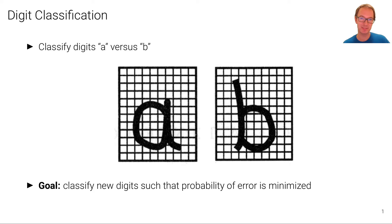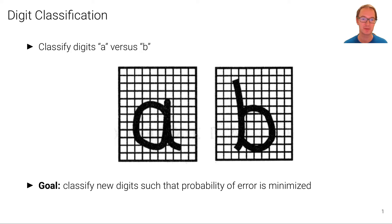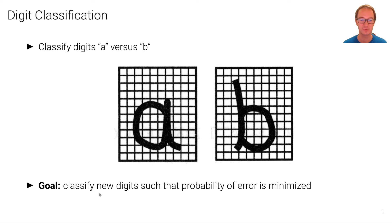So let's consider a digit classification task where the goal is to classify digits A versus B. We have just two digits and we want to classify — if you see a picture, you can see this pixel matrix here — do we see a picture of an A or a picture of a B? We want to classify new digits such that the probability of some error metric is minimized.